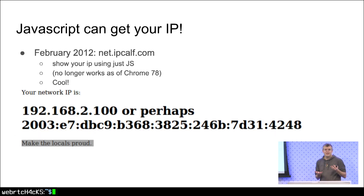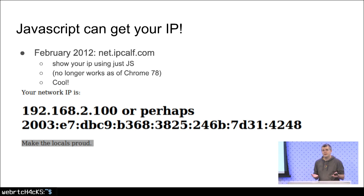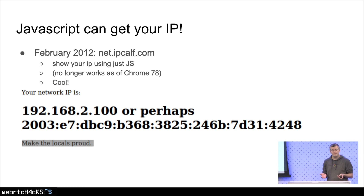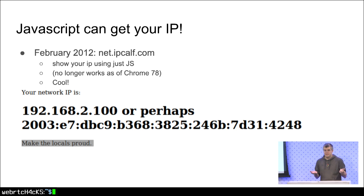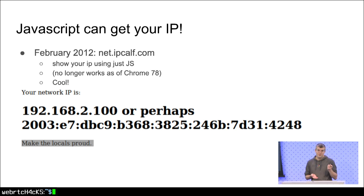So it actually means that JavaScript can get your IP. Back in 2012 there was a cool website, netipcalv.com, which was showing your IP using just JavaScript — no calls to any server. And that actually worked until Chrome 77 earlier this month. It just showed your IP: IPv4, IPv6, any local IP. And now it's broken, thankfully.